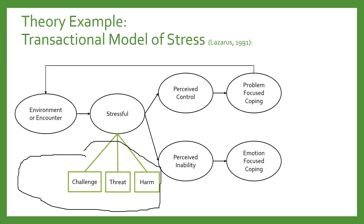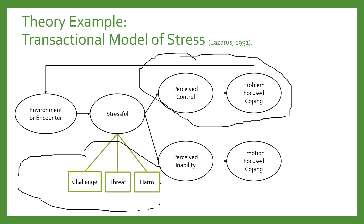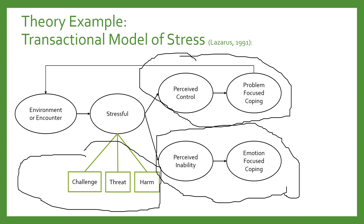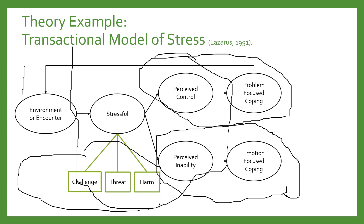This model suggests that if a person feels they have something to lose from a harmful, threatening, or challenging situation, they will consider options for dealing with the stress. If they feel in control, they will use problem-focused coping — seeking information about what needs to be done and changing their behavior or environment. Problem-focused coping only arises when the person thinks they can control the situation through their own efforts. Emotion-focused coping kicks in when people feel they do not have the ability to change their behavior or the environment. You've got the observable external stimulus, then constructs in the middle, then external observable behaviors through the way they cope.